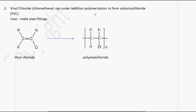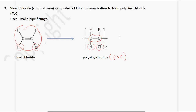The second example is PVC. The monomer is vinyl chloride, which has a carbon-to-carbon double bond. When vinyl chloride undergoes addition polymerization, the double bond disappears and becomes a single bond, but all the same atoms remain present — two H's and one Cl. This forms polyvinyl chloride, or PVC, which is used to make pipe fittings.